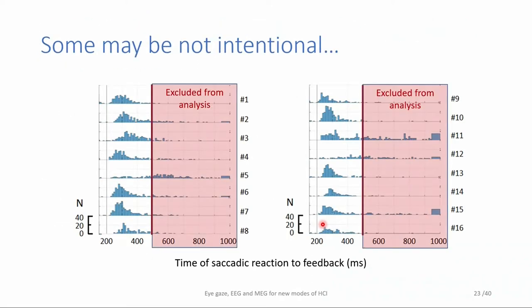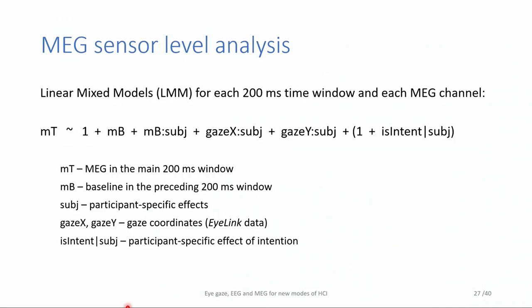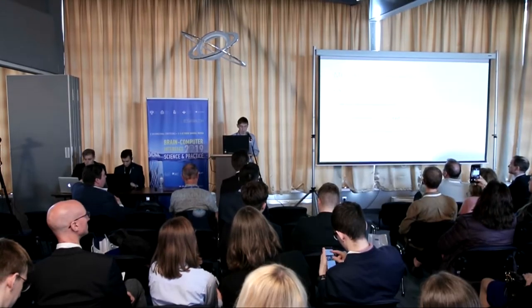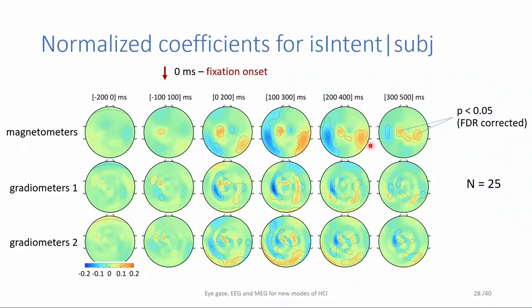We registered MEG. After completing source analysis, we will have localization of the sources showing the difference between spontaneous and intentional fixations. MEG provides very nice localization — not exactly like fMRI, but comparable. We already made a sensor-level analysis using linear mixed models — very powerful statistical methods. Maps are shown for different types of MEG sensors: magnetometers and two types of gradiometers, across different time windows.